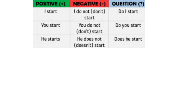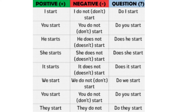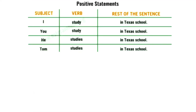Here are some more examples. In a positive sentence: 'I study in Texas school.' Here, 'I' is the subject, 'study' is the verb, and 'in Texas school' is the rest of the sentence. Another example: 'You study in Texas school.' Here, 'you' is the subject, 'study' is the verb, and 'in Texas school' is the rest of the sentence. Another example: 'He studies in Texas school.' Here, 'he' is the subject, 'studies' is the verb, and 'in Texas school' is the rest of the sentence.